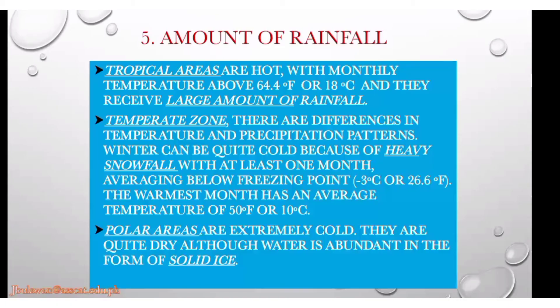For the amount of rainfall: tropical areas are hot with monthly temperature above 64.4 degrees Fahrenheit (18 degrees Celsius) and receive a large amount of rainfall. In the temperate zone, there are differences in temperature and precipitation — winters can be quite cold with heavy snowfall, with at least one month averaging below freezing, around negative 3 degrees Celsius or 26.6 degrees Fahrenheit. Polar areas are extremely cold and quite dry, although water is abundant in the form of solid ice.